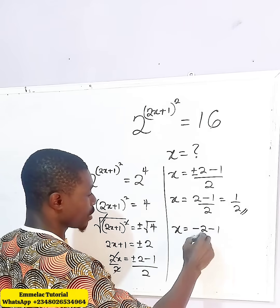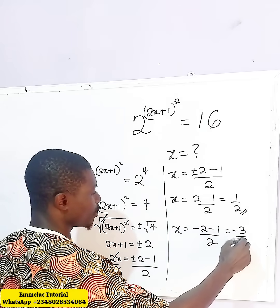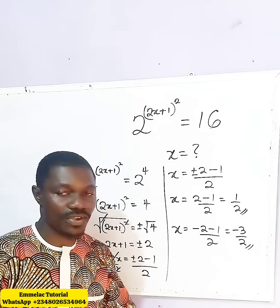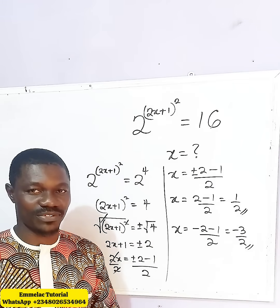Then second solution is x, taking the negative side, we have minus 2 minus 1 all over 2, giving us minus 3 over 2. Final answer. Thank you and God bless you.